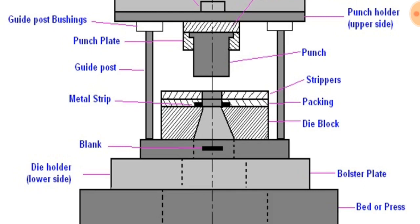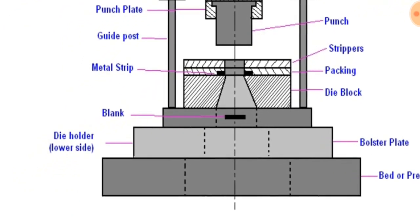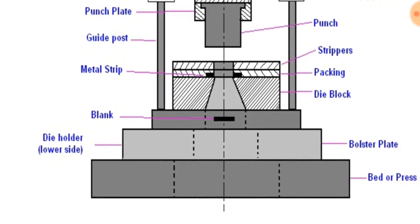Lower shoe: the lower shoe of a die set is generally mounted on a bolster plate of a press. The die block is mounted on the lower shoe; also the guide posts are mounted on it.